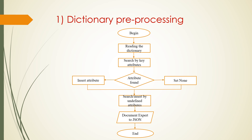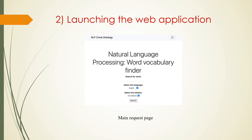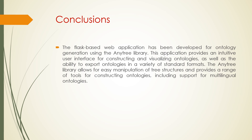Once the desired attribute is located, the algorithm inserts the relevant information into the data structure; if the attribute is not found, it sets the value to none. The algorithm then searches for target attributes and inserts relevant information, finally exporting the document to a JSON format file for further processing. The web application has forms with fields used in the interface, described in separate files, and implements a main request page and a search result page.